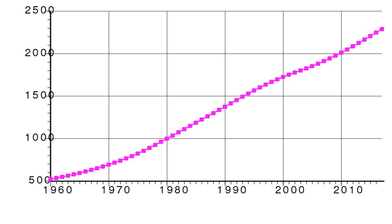The seven censuses of Botswana before its independence happened irregularly. Due to the Anglo-Boer War, the first census of Bechuanaland Protectorate, originally set to occur in 1901, took place on 17 April 1904. The 1931 census was postponed to 1936 because of the Great Depression. The early censuses were unreliable and took several years to tabulate; the results were outdated by the time they were calculated.